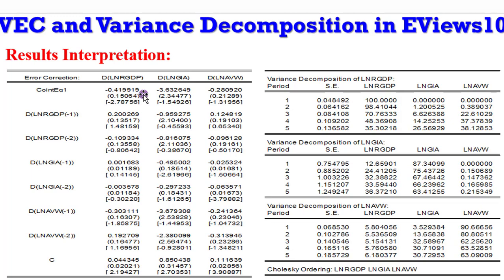Now let's look at all these coefficients. Once you see the difference sign or the difference operator, it represents short-run coefficients. The cointegrating equation — the error correction term — captures the long-run equilibrium and signifies convergence to long-run equilibrium. That is why we always hope the coefficient has a negative sign. If the coefficient is positive, the model will not converge to long-run equilibrium and will be explosive. In analyzing the short-run relationship for real GDP, there is no significant coefficient — none of the t-statistics is up to 2.